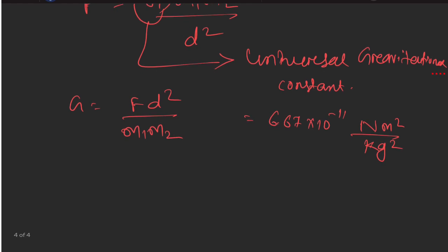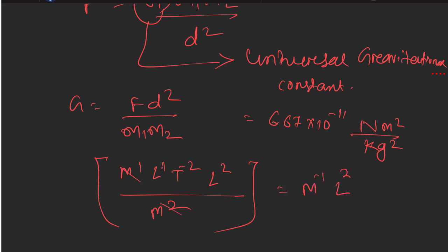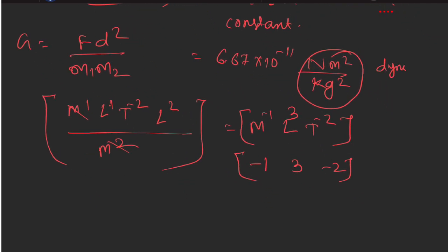For dimensional analysis of G: force has dimensions M¹L¹T⁻², and distance squared is L². Dividing by M1×M2 (kg squared), we get the dimension of G as M⁻¹L³T⁻². The SI unit is Nm²/kg² and the CGS unit is cm²/g².